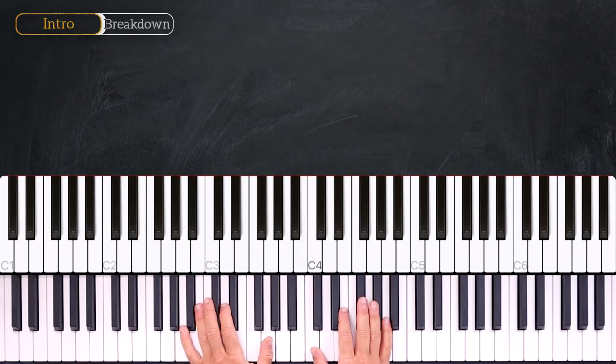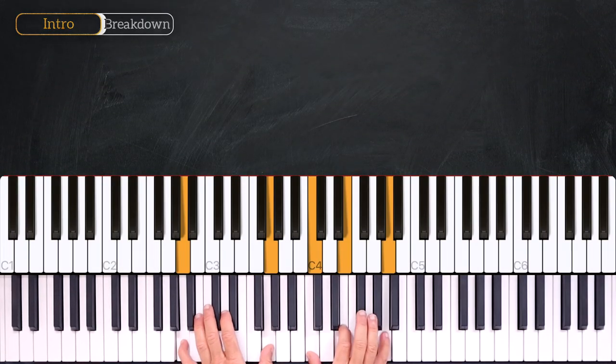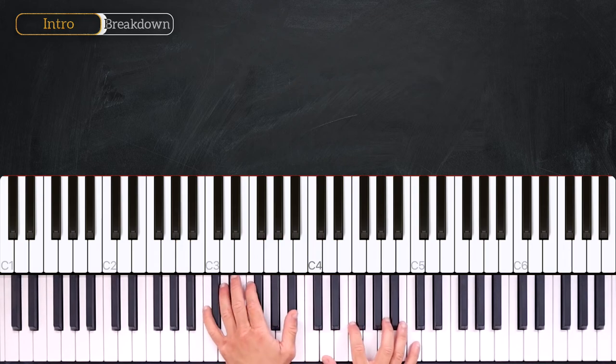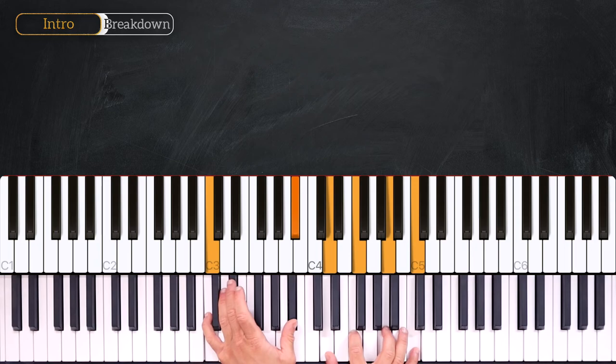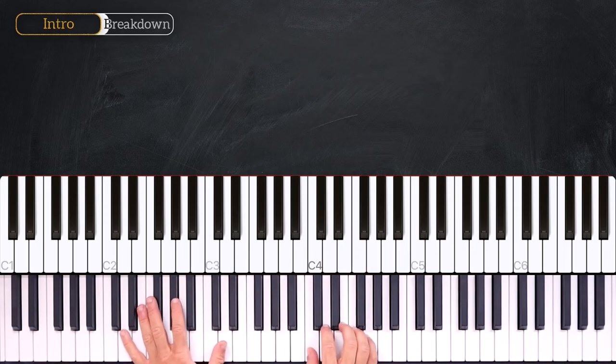Let's recap the chords. We start on Am7, 1, 2, 3, 4, 1, 2, 3. Then we play C13. So by the way, here is the 9th, the 11th, the 13th. And we'll finish on this Dm11.